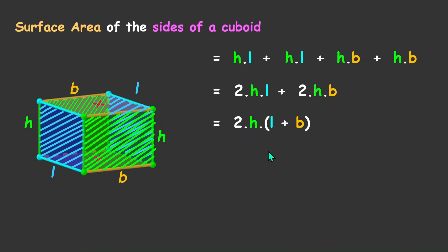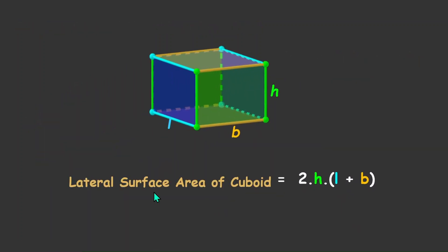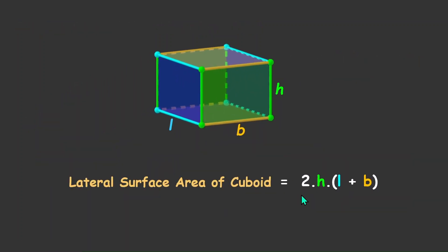So the lateral surface area equals 2 times the height multiplied by the sum of length and breadth — that is the formula for the lateral surface area of a cuboid with dimensions H, B, and L. That's about it. Thank you.